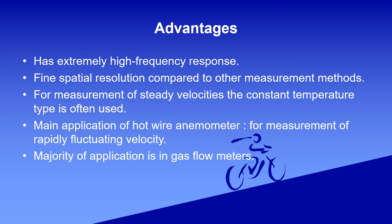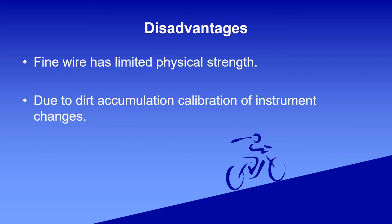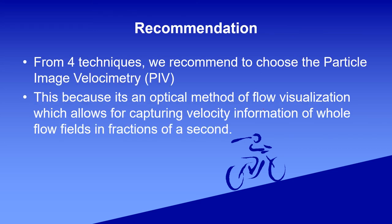HWA has five advantages: extremely high frequency response, special spatial resolution compared to other measurements, measurement of steady velocities, the constant temperature type, and its main applications. The disadvantage is that the fine wire has limited physical strength, and accumulation causes calibration changes. The majority of applications are in gas flow meters.